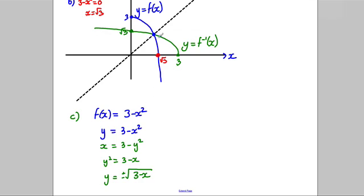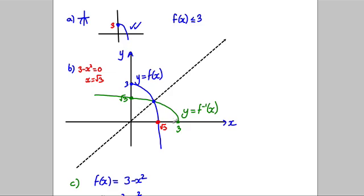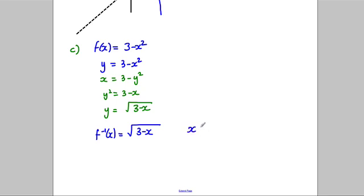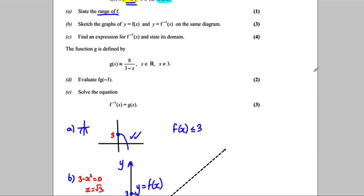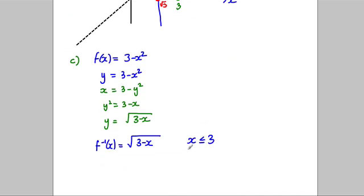Now, we saw from our graph that because our original graph was restricted, we only want the positive values that the inverse function takes — they're all positive, above the x-axis. So at this last stage we don't want the negative square root. Therefore our inverse function f⁻¹(x) = the square root of 3 subtract x. For the domain, it can take any x value less than or equal to 3. This matches the range of the original function — the domain of the original function always equals the range of the inverse function.